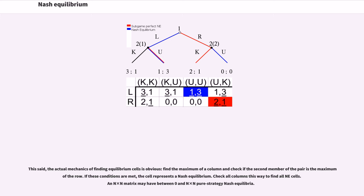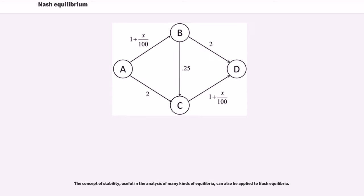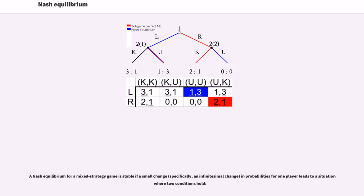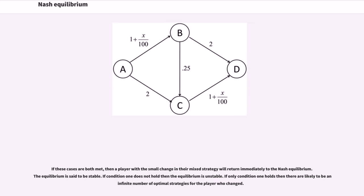The concept of stability, useful in the analysis of many kinds of equilibria, can also be applied to Nash equilibria. A Nash equilibrium for a mixed strategy game is stable if a small change in probabilities for one player leads to a situation where two conditions hold. If these cases are both met, then a player with a small change in their mixed strategy will return immediately to the Nash equilibrium — the equilibrium is said to be stable. If condition 1 does not hold then the equilibrium is unstable. If only condition 1 holds then there are likely to be an infinite number of optimal strategies for the player who changed.